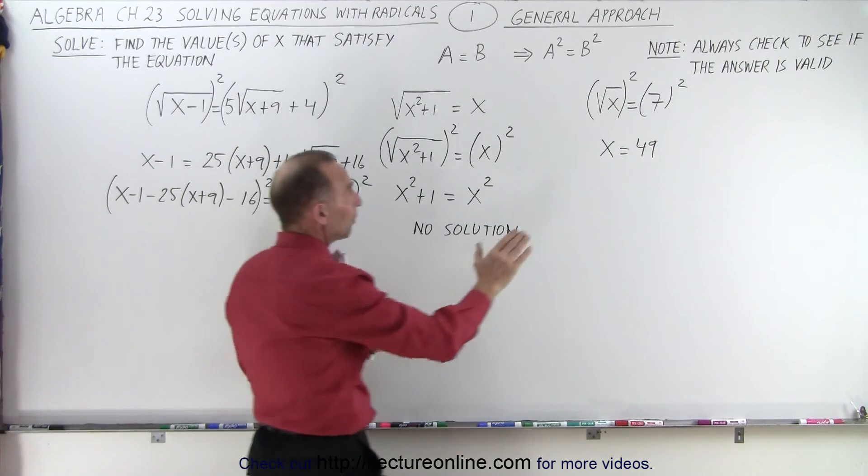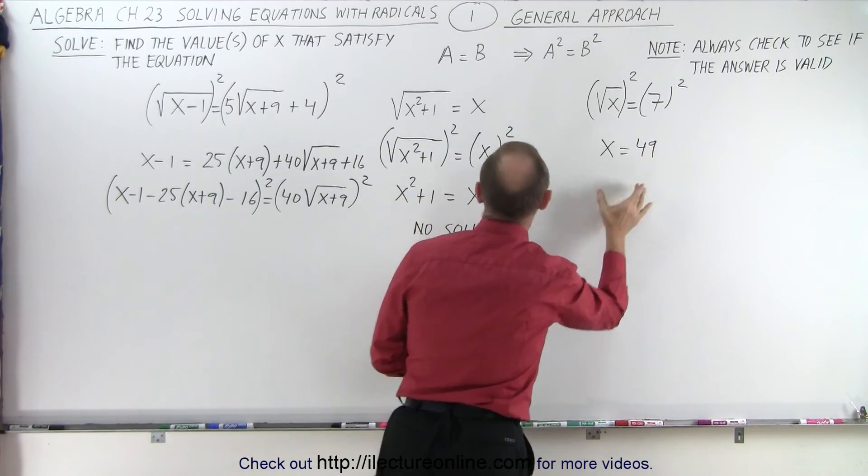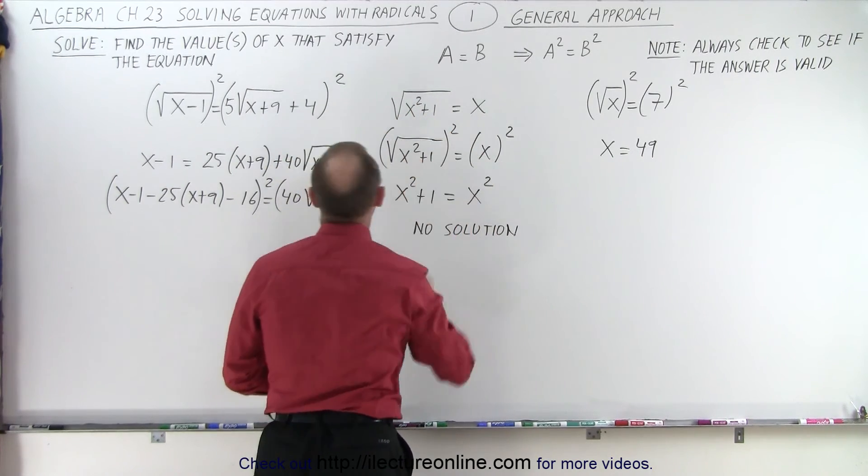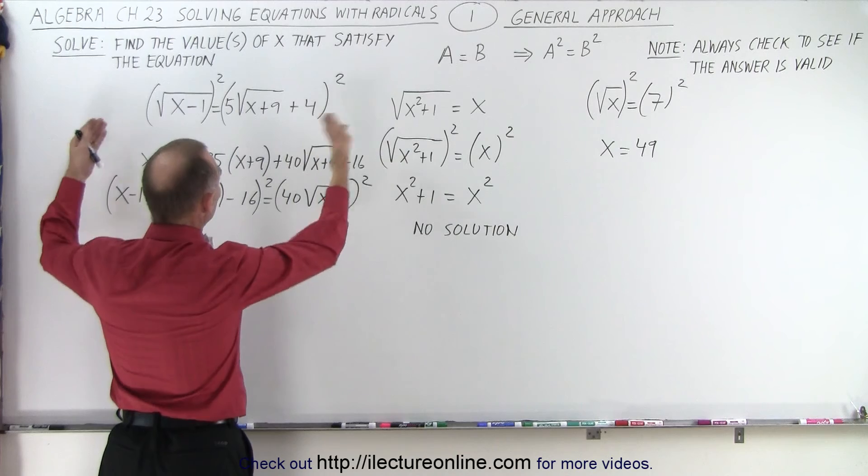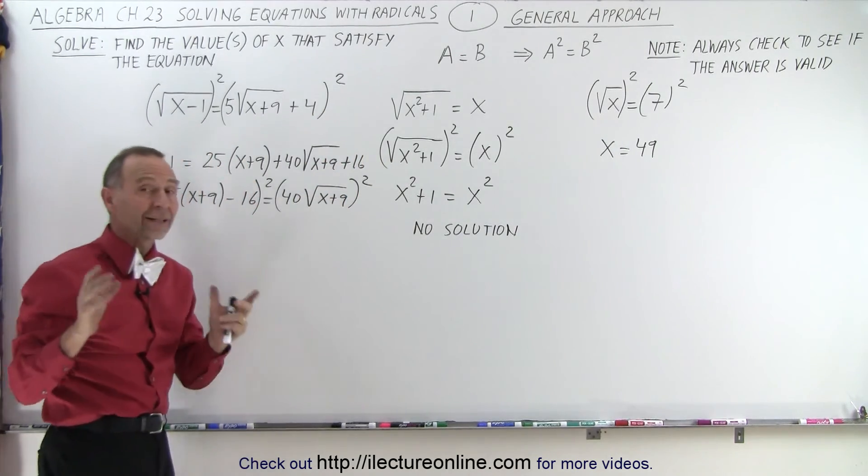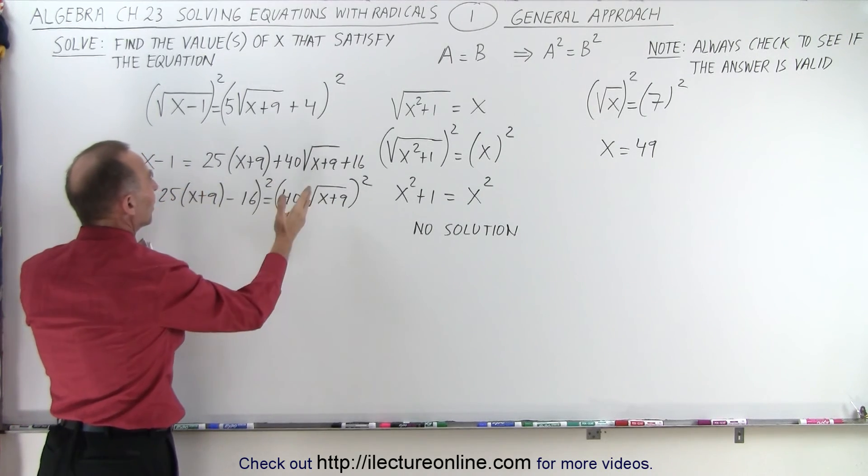Either we can separate the radical on one side from the numbers on the other side and square it, or separate all the radicals from all the non-radicals and square it. Or here we have two radicals - we square both sides, and once we have that squared, we recognize we have one radical left. Then we separate them again.